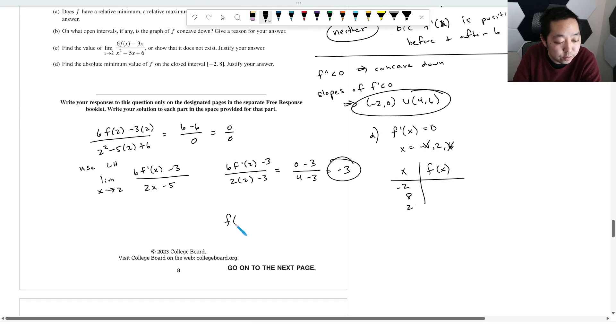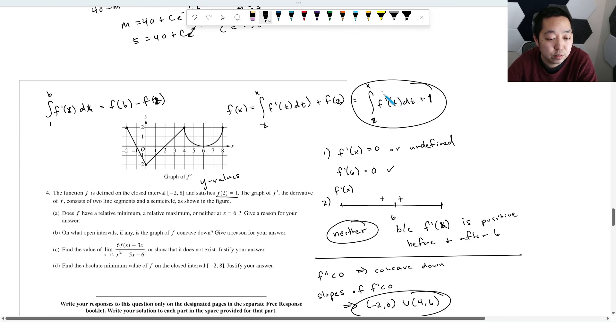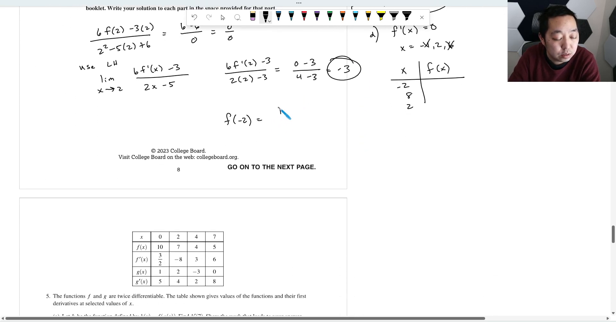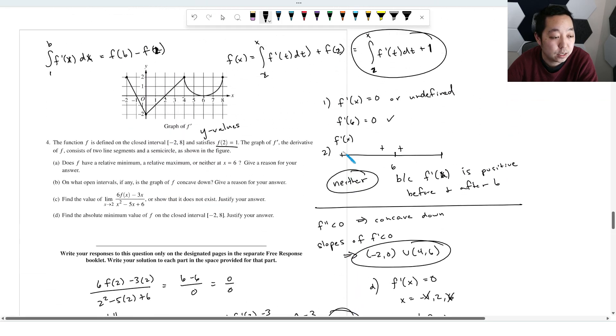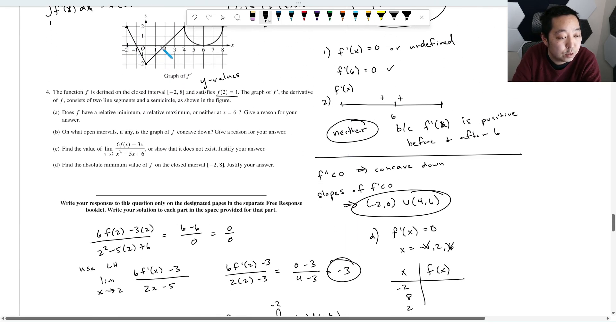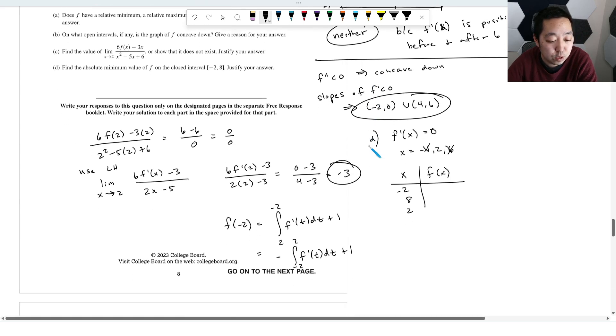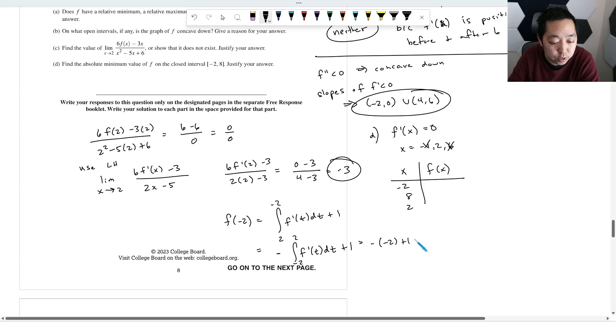f of negative 2, just kind of looking at our function here, it's the integral from 2 to negative 2 of f prime of t dt plus 1. Now, because the bounds are from right to left, like positive to negative, I like to flip it around so you can do the area correctly. Because I just remember if I go left to right, any area below the x-axis is negative. So I want to do the area from negative 2 to 2, which is going to be this area here. One half base times high, that area is 1. This is 3 by 2, so that area is negative 3. So from negative 2 to 2, we're gonna have 1 minus 3, that's negative 2. So this is negative negative 2 plus 1, and that's going to be 3. Hopefully I didn't do that too quickly.